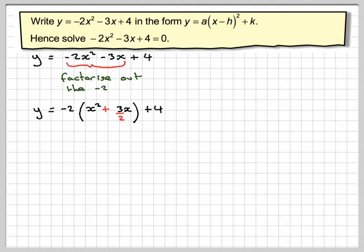Now we're in a position where we can complete the square. So we look at this term here and we take half of that. Half of 3 over 2 is 3 over 4. So you have to have your wits about fractions with you. So we get minus 2 brackets x plus 3 over 4 all squared. We've still got the plus 4 but in doing this process we've added something in.